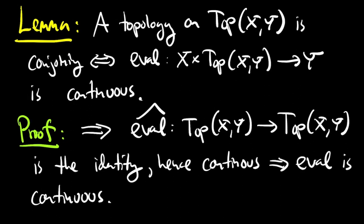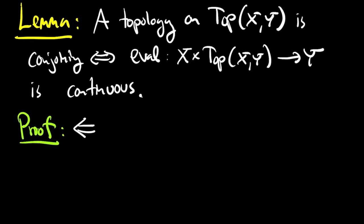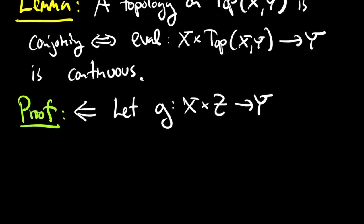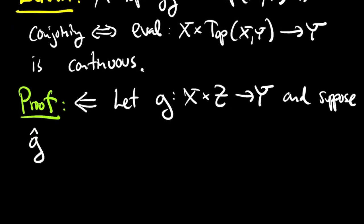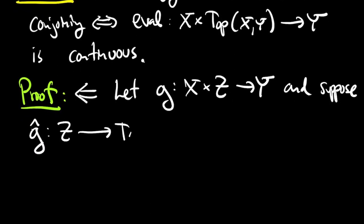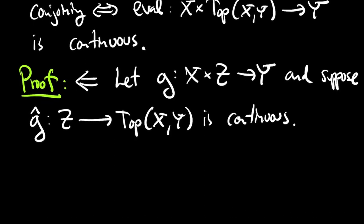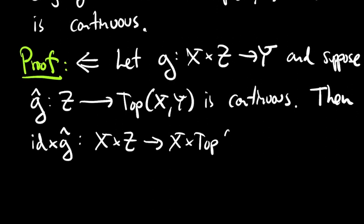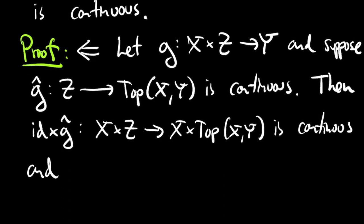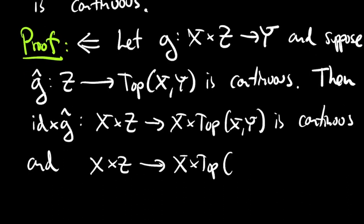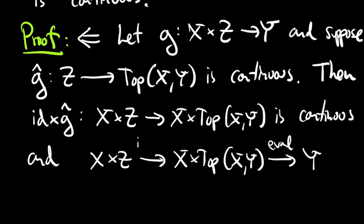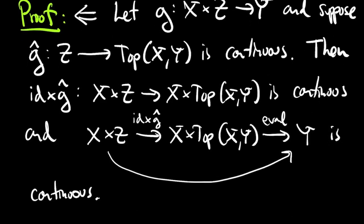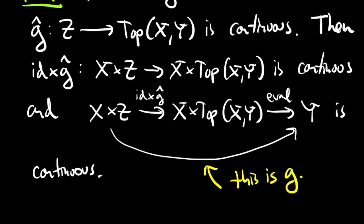Going back to the lemma: the identity map is continuous from top(x,y) to top(x,y) with any topology. If that topology is conjoining, then the corresponding map of two variables is continuous — in this case, that's the evaluation map. To prove the other direction, assume the evaluation map is continuous. You want to prove that topology is conjoining. Start with any function g from x cross z into y such that the adjunct g-hat from z into the space of maps from x to y is continuous. If g-hat is continuous, when you cross it with the identity on x it will be continuous, and composing with the evaluation map — which is continuous by hypothesis — the resulting composition is precisely the function g. This proves the topology is conjoining.